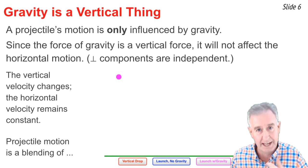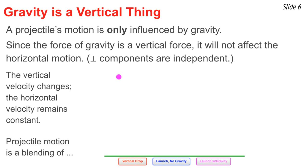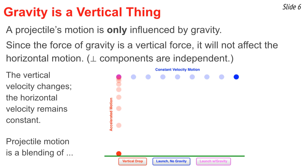We can think of projectile motion as a blend of a constant horizontal velocity and a vertical acceleration. In this simulation, we first drop a ball to show free-fall vertical acceleration. Then we turn gravity off and launch it horizontally — it travels at constant velocity with no gravity to pull it down. A projectile combines both motions simultaneously. When gravity is turned back on, the projectile's location at any moment is the blend of the horizontal and vertical positions, and the result is that the projectile moves along a parabolic pathway.